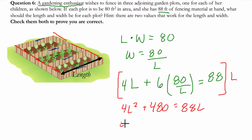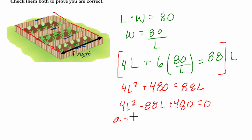I'm going to rearrange this, so I get 4L squared minus 88L plus 480 equals 0. So I'm solving this quadratic equation, and I'm going to identify that a is 4, b is negative 88, and c is 480.